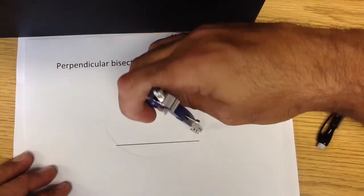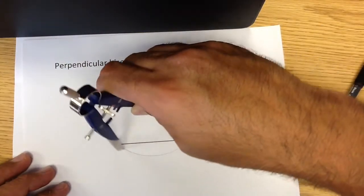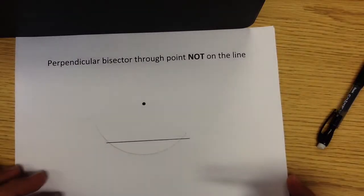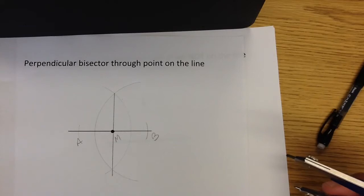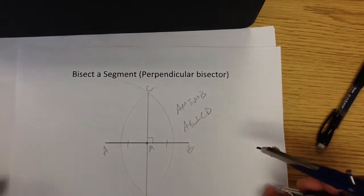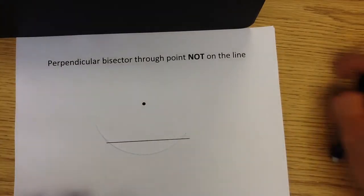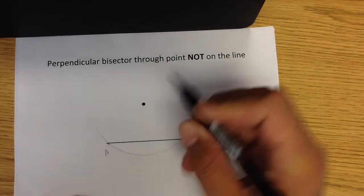So if you look carefully I made what I like to call a smiley face and I have crossed the line twice and then I'm going to do the exact same construction almost that I did in the last one and the previous one and I'm just going to use the intersections as my A and B.